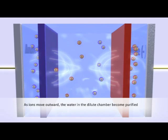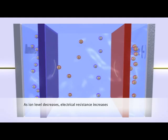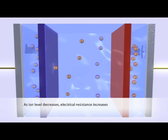In other words, as the product compartment water becomes more and more pure, the electrical resistance of this water increases and counters the effect of the electrical field.